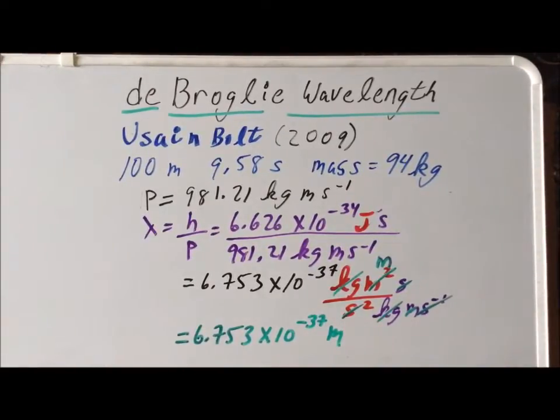Now that is a correct answer, which we've done correctly, but it doesn't give us physical insight into the problem. A useful comparison is the actual diameter of a proton, which has a diameter of about 10 to the minus 15 meters.